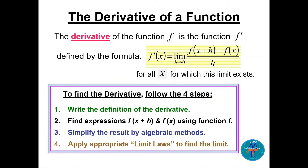We start directly with the derivative of a function. It will be f prime of x, defined as the limit of f(x + h) minus f(x) divided by h, as h goes to zero. To find the derivative, follow four steps: write the definition of the derivative, then find expressions for f(x + h) and f(x).